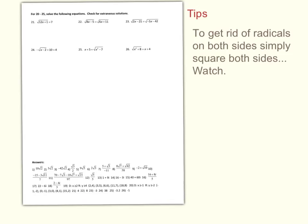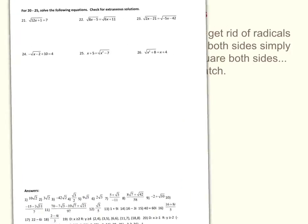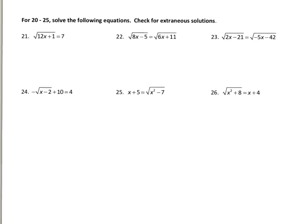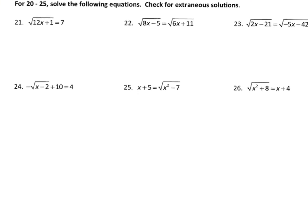Page three has one main type of question: solving equations with radicals by getting rid of the radical. To eliminate a radical, simply square both sides. The key trick is when you square a side that has a binomial — you have to foil it, not just square each term. I'll look at question 25, since 26 is very similar.